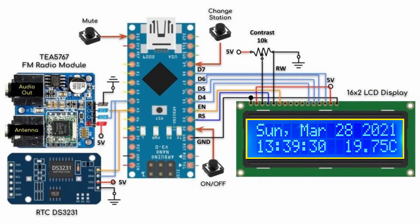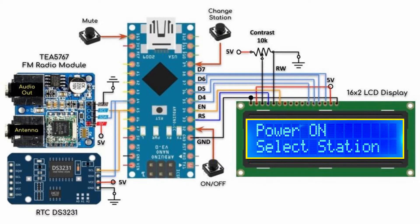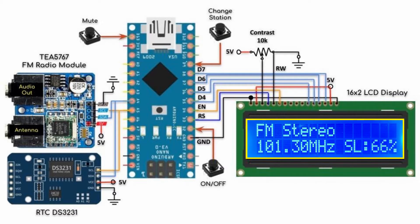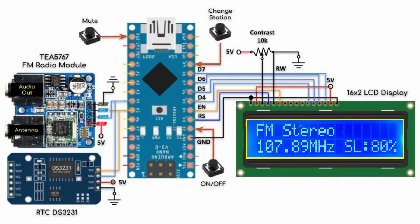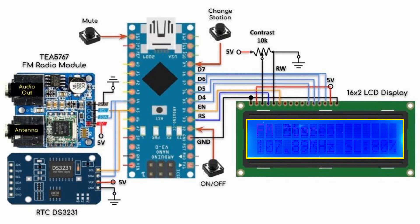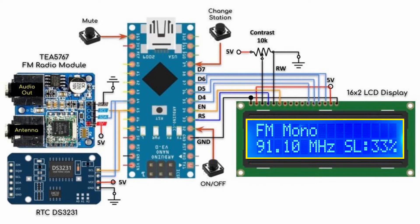And now for a quick demo — as you can see on the LCD screen, we have the clock information displayed. We press the on-off button to switch on the FM radio, then press the station button to select the required station. Pressing the button again will go to the next station. We press the mute button to mute the audio. The screen displays stereo or mono, the frequency of the station, and the signal level.